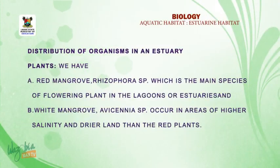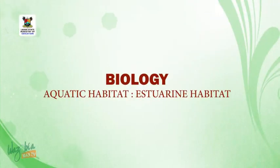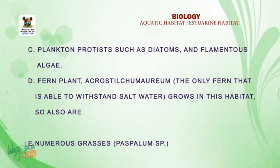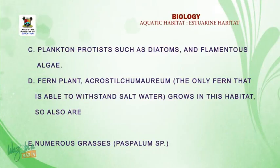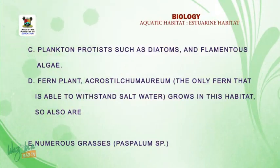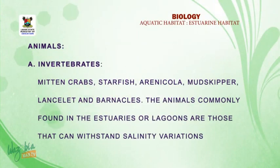We shall continue after a break. Welcome back. More examples of plants found in an estuary: plankton — plankton are microscopic plants and protists such as diatoms and filamentous algae. Fern plants are also found in the estuary; an example is Acrostichum aureum — the only fern able to withstand salt water. We also have numerous grasses like Paspalum species.